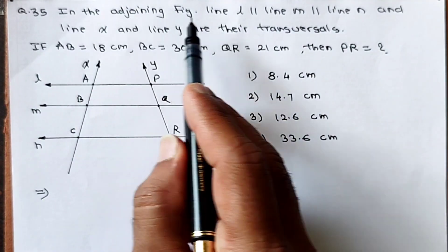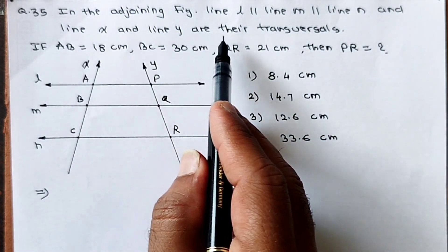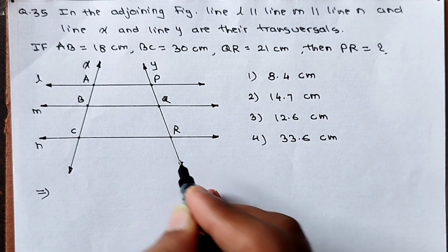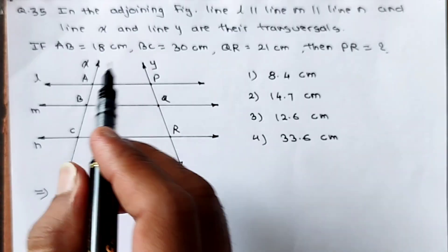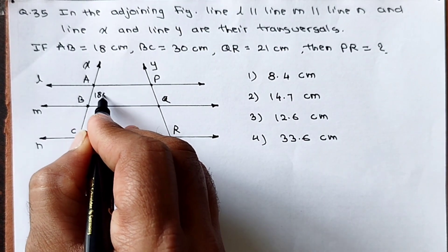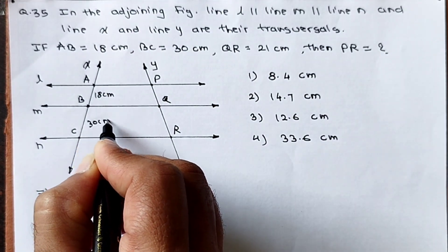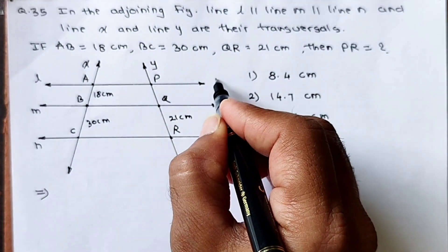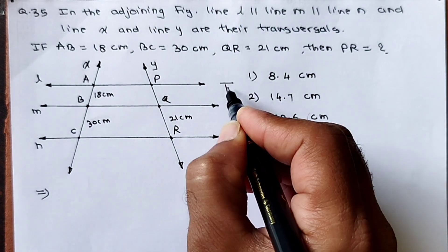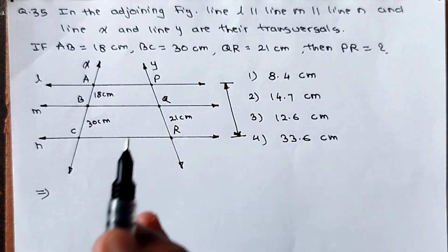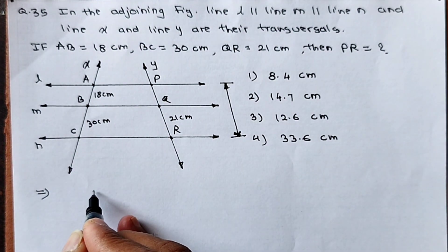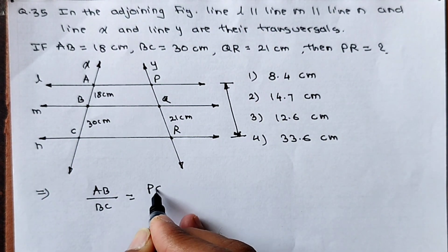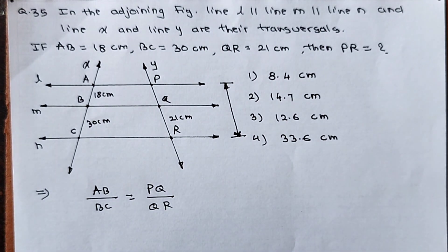See question number 35: in the adjoining figure, line L is parallel to line M, parallel to line N, and lines X and Y are their transversals. Given: AB = 18 cm, BC = 30 cm, QR = 21 cm. What is asked: find PR. Using the property of parallel lines cut by transversals: AB/BC = PQ/QR.